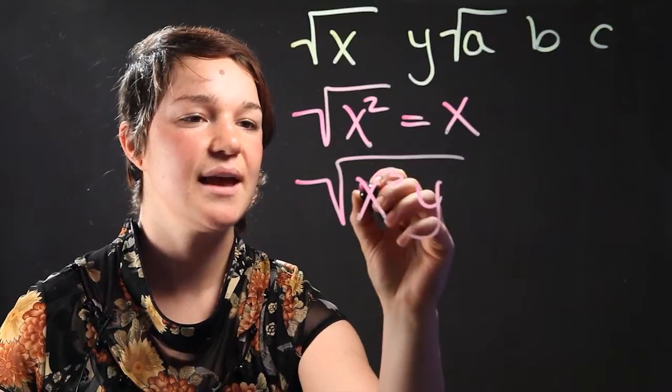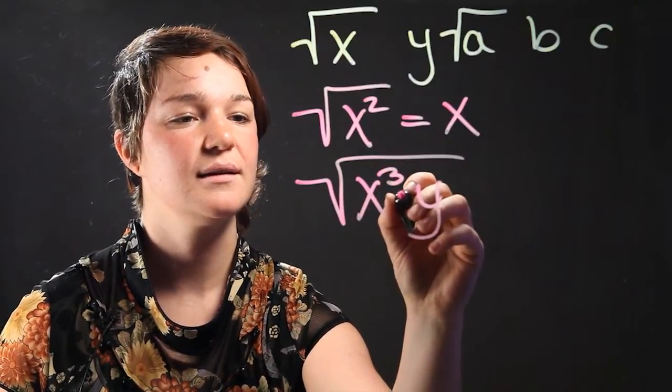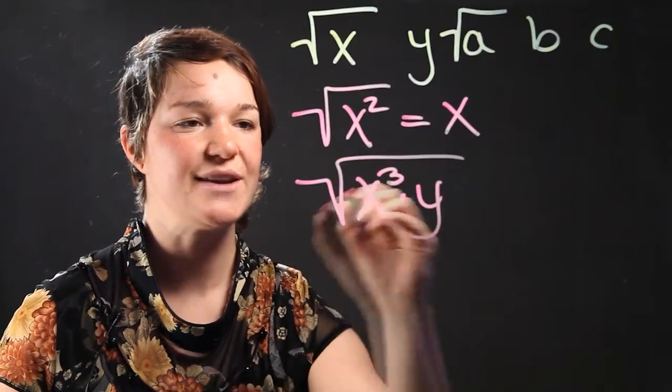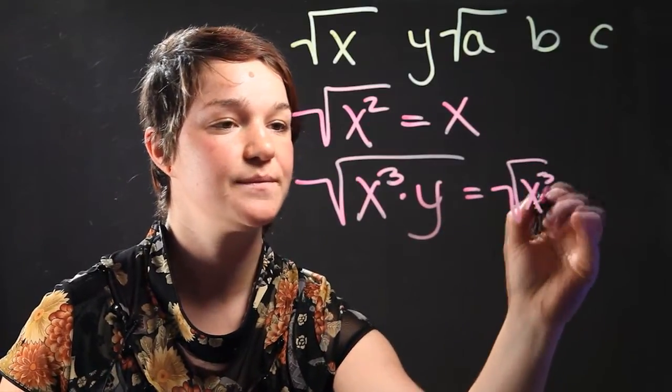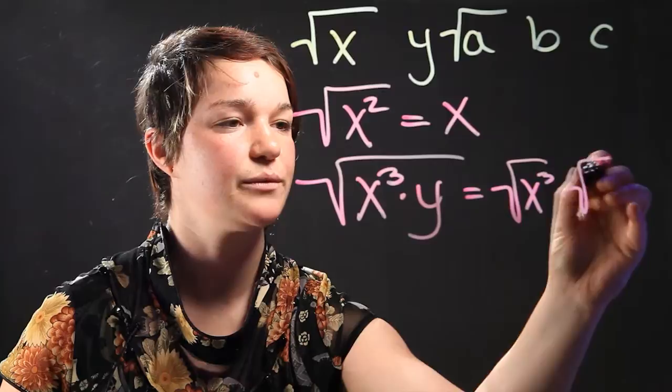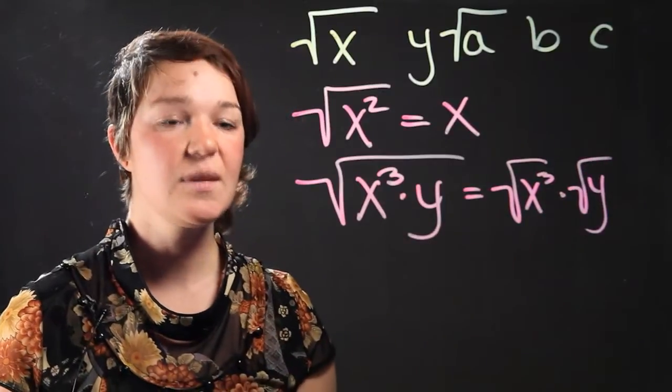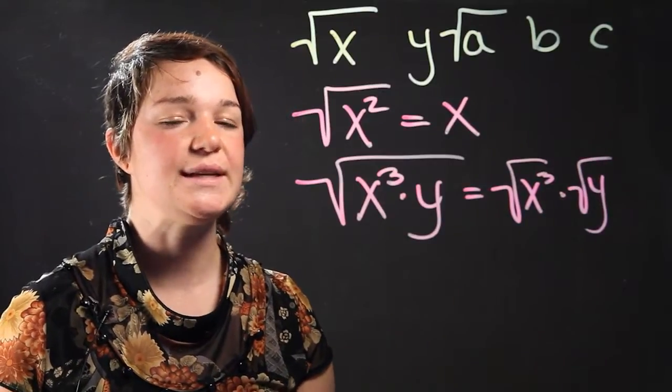we have to realize that x cubed times y is a multiplication. So it's the same as saying square root of x cubed times the square root of y. That makes it a little bit more simple and easy to break down.